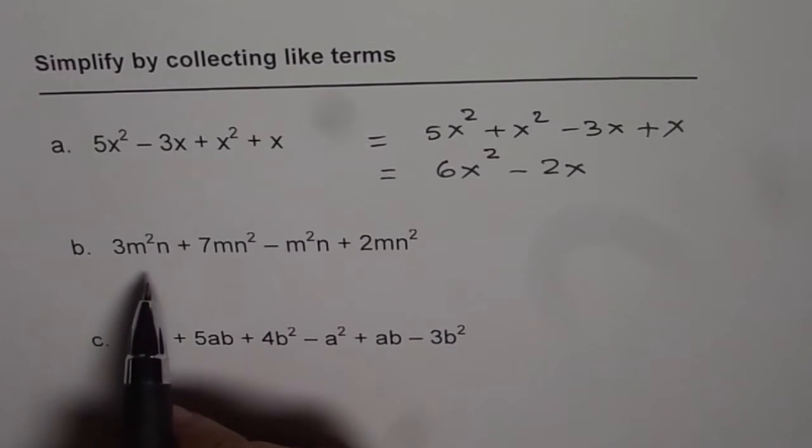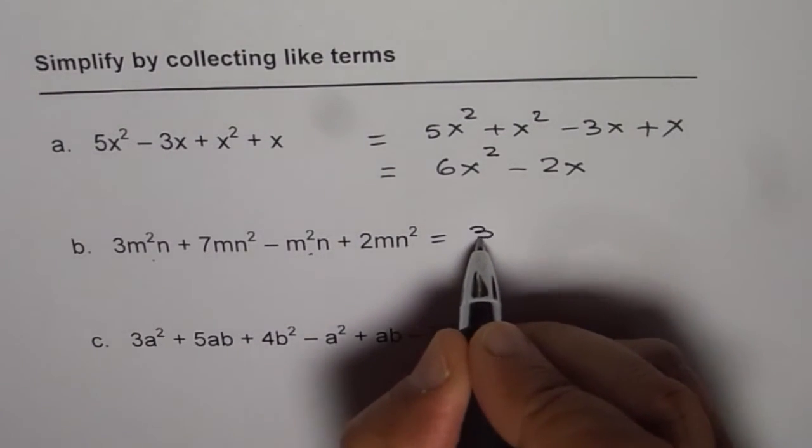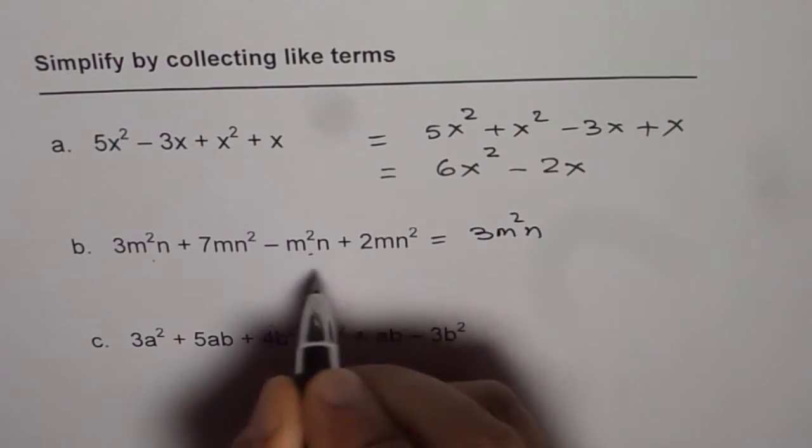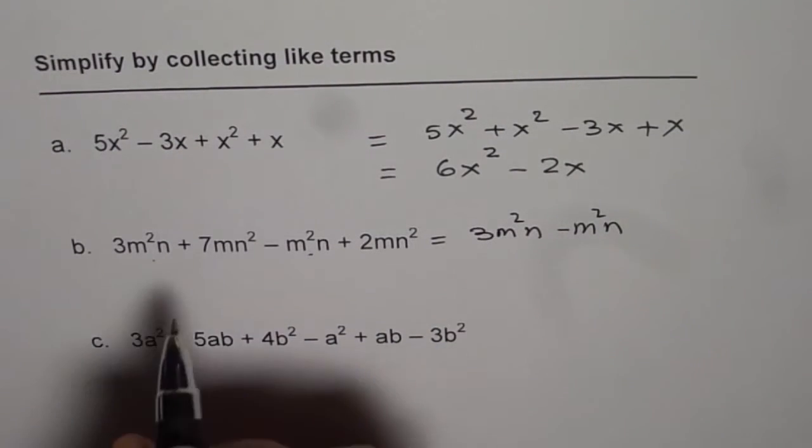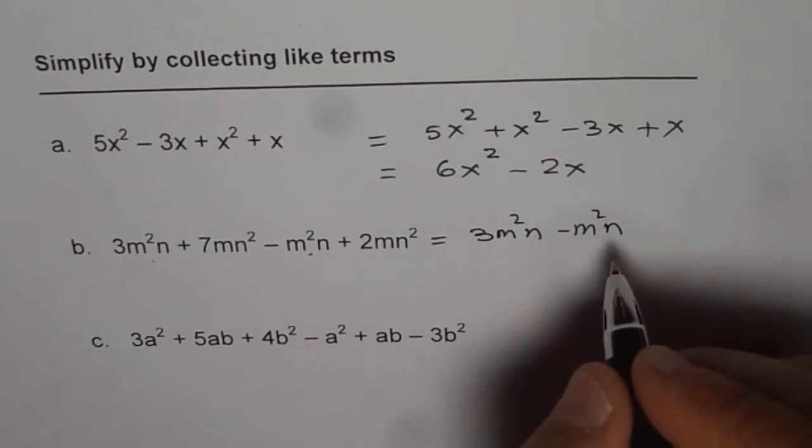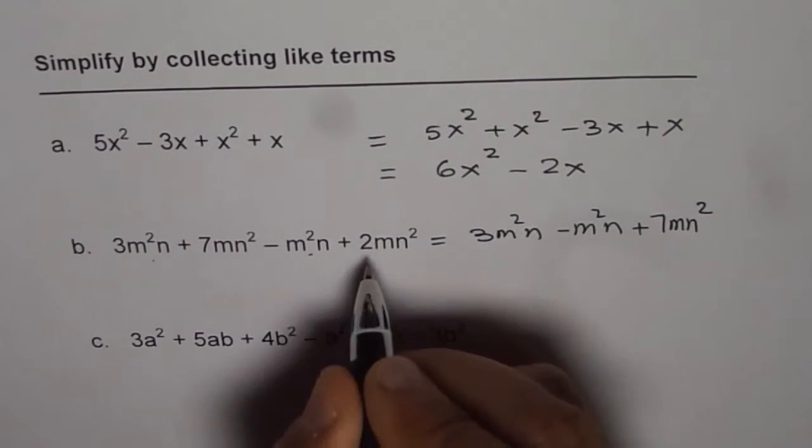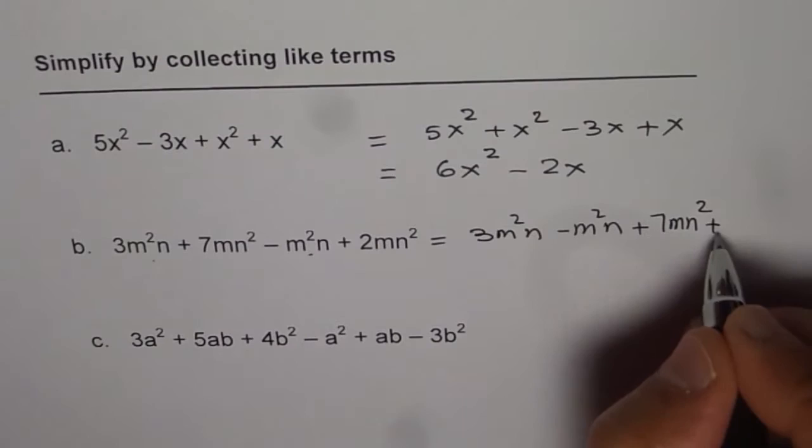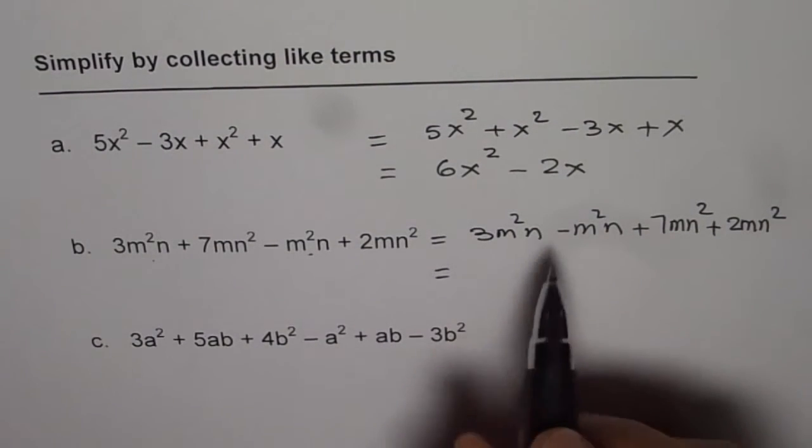The next one is 3m²n. Now that is a like term, so let's rearrange. We get 3m²n and bringing -m²n next to that. We are left with 7mn². This is +7mn² and +2mn².